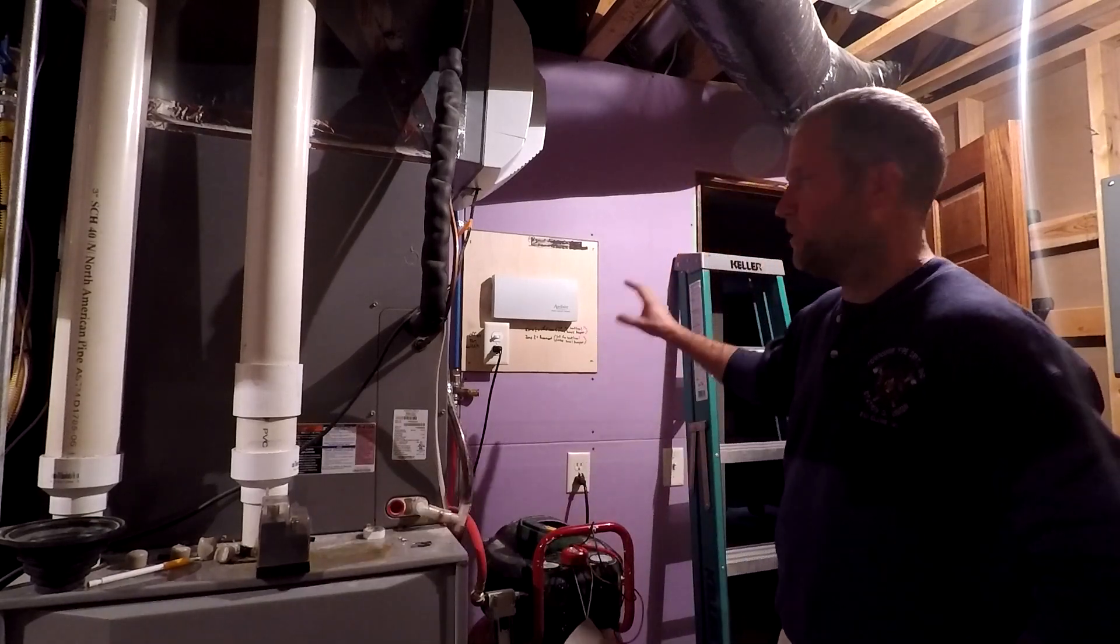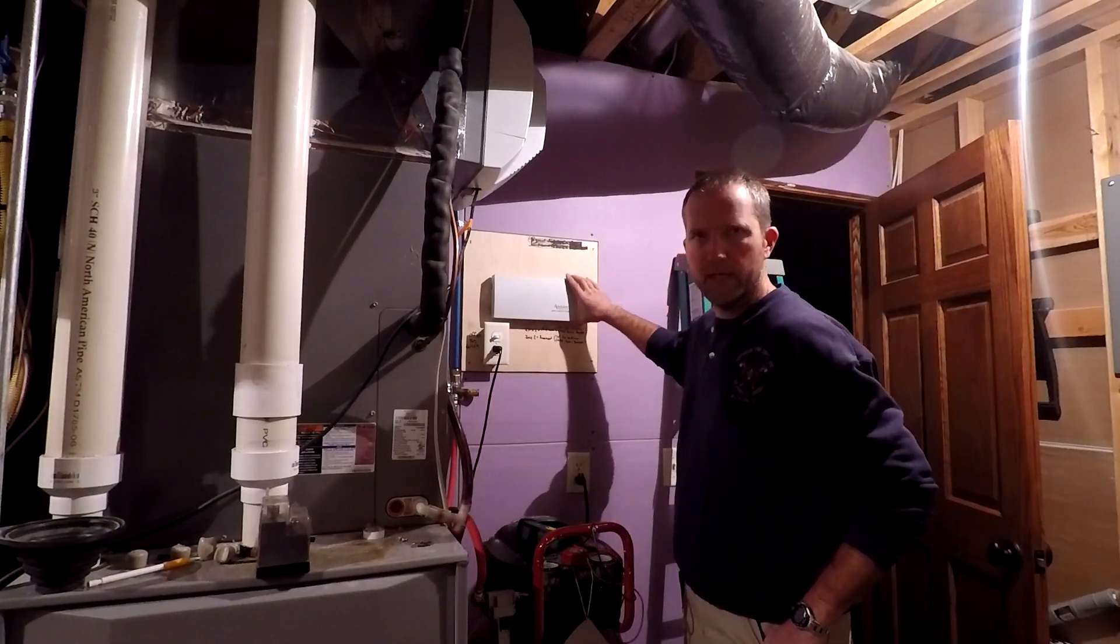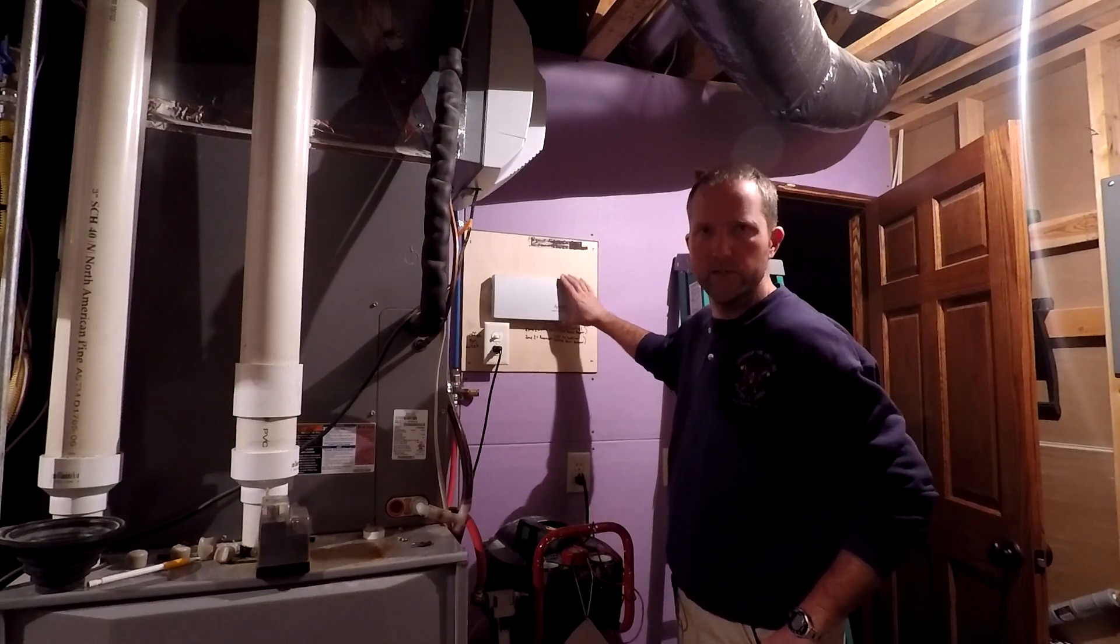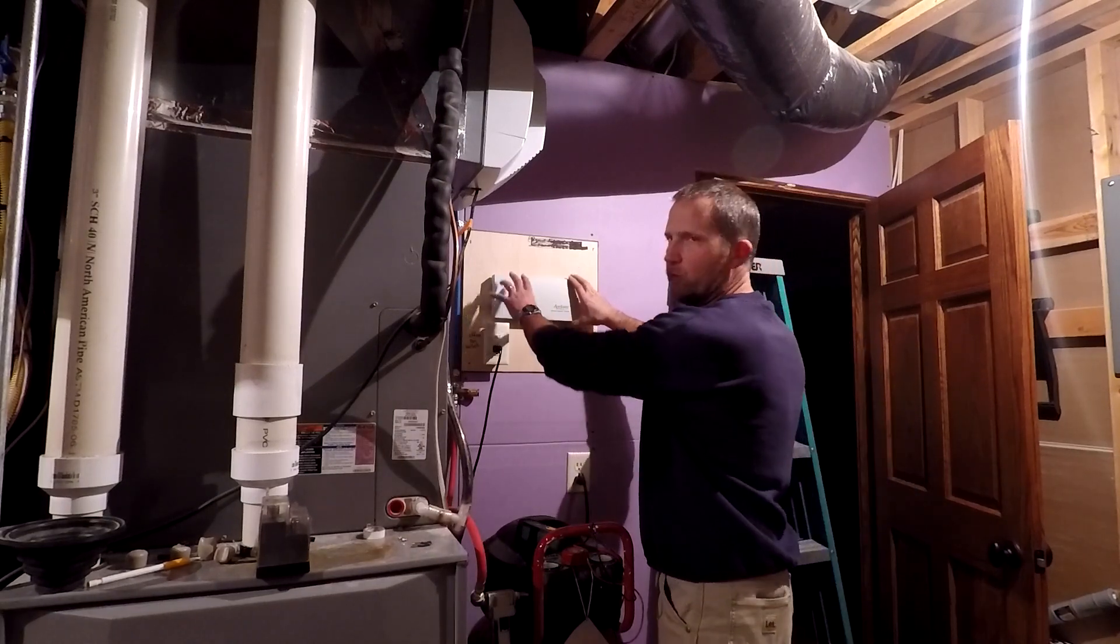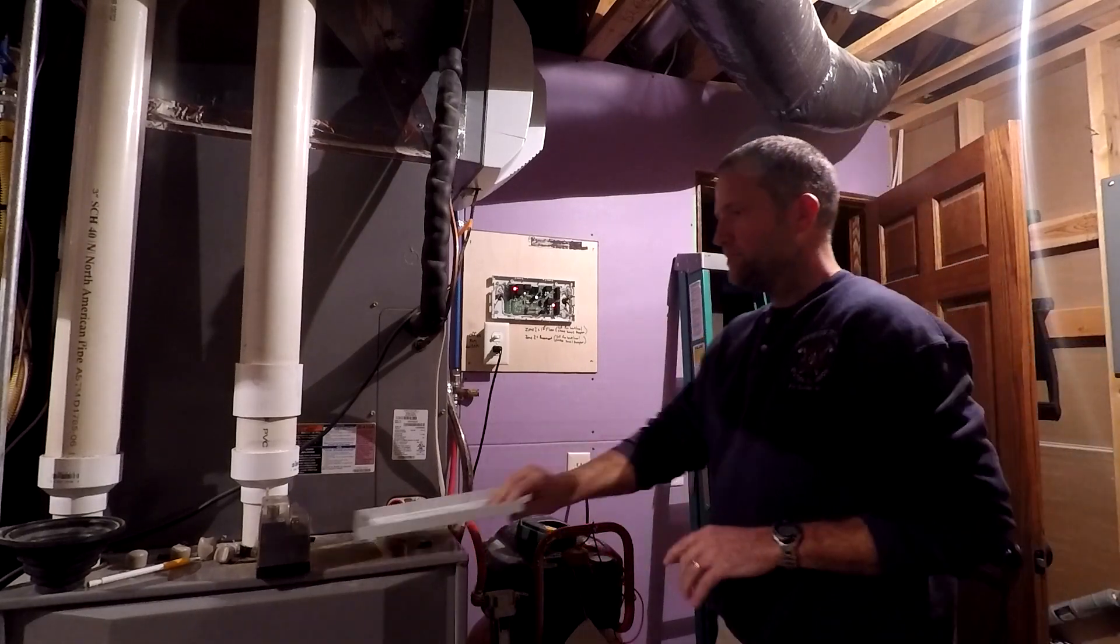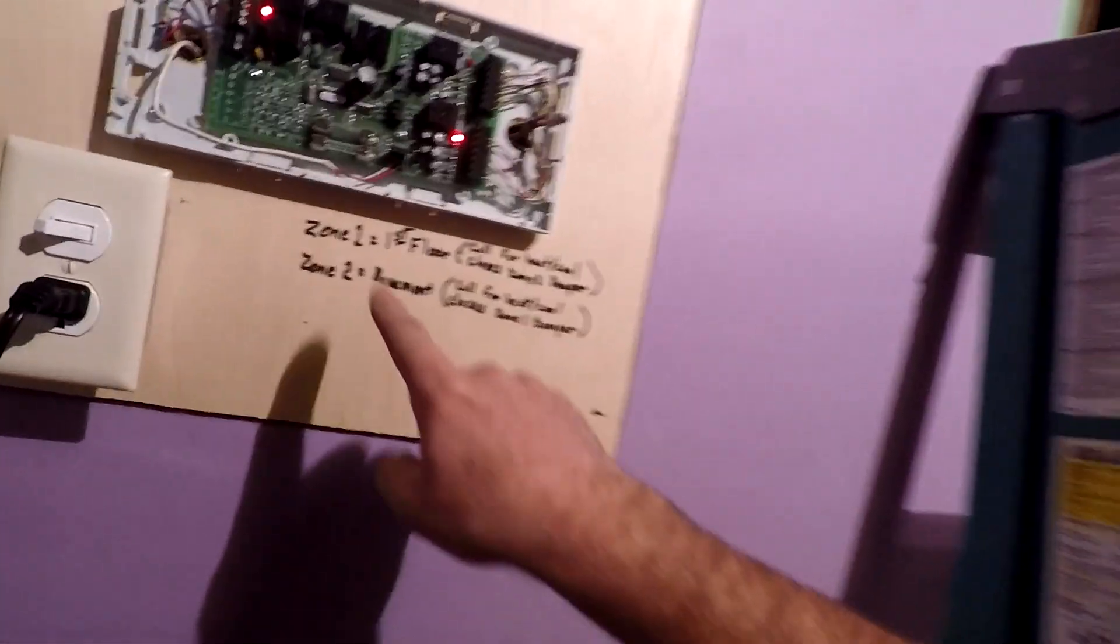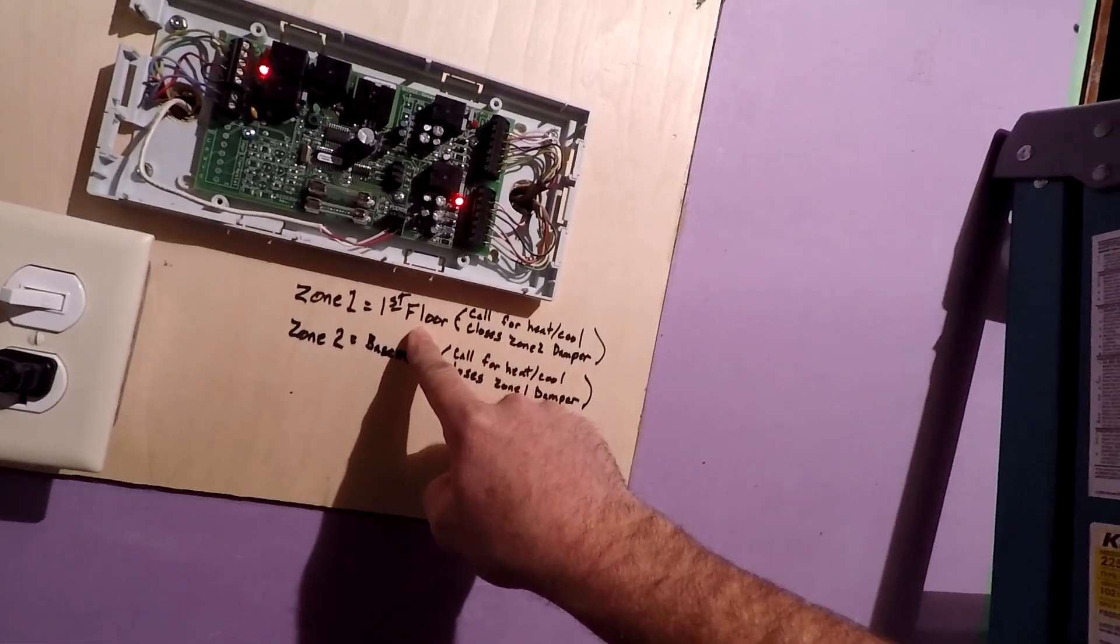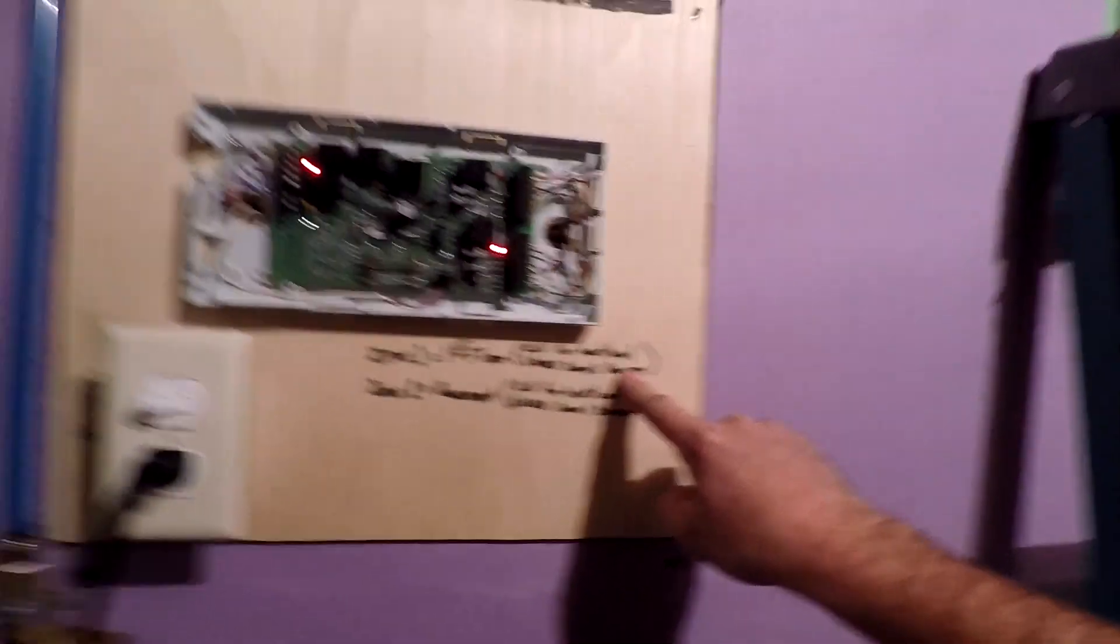If you've got a zoned system from Aprilaire, it's got a box like this somewhere in your furnace room, utility room like we're in right now. That's the heart of the system right there. Right now, zone one, which is my first floor, is calling for heat. That's upstairs.